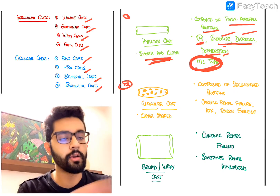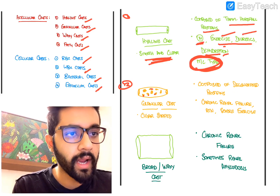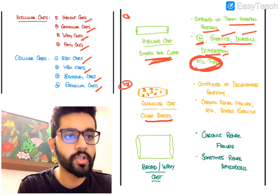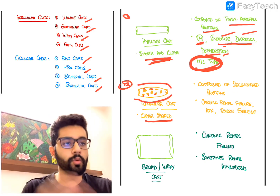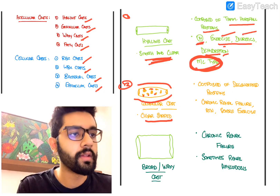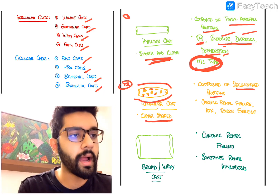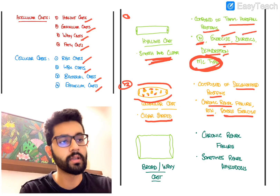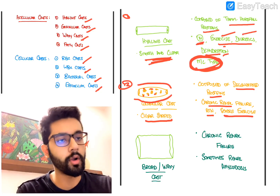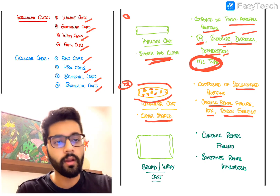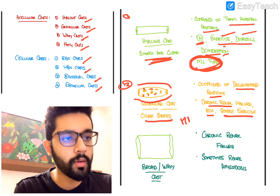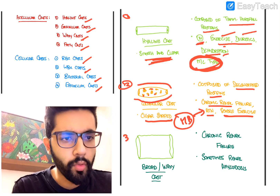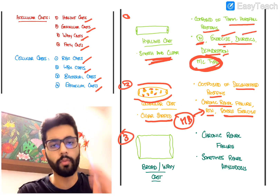Granular casts are another type of acellular cast. They are easily visualized compared to hyaline casts, and are cigar-shaped - slightly blunted at the ends. They are composed mainly of degenerated proteins and can be seen in chronic renal failure, acute tubular necrosis, and sometimes severe exercise. If they are muddy brown, they are more particularly indicative of acute tubular necrosis.